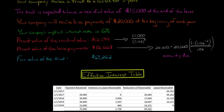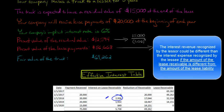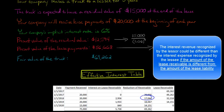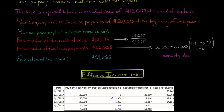On January 1st, we have the $69,262 lease receivable, but we immediately receive a payment of $20,000 from the lessee, so the receivable drops to $49,262. After one year, we multiply $49,262 by 0.06, which gives us effective interest of $2,956. The interest increases the receivable while the $20,000 payment reduces it, so the net change is $17,044. Subtracting that from $49,262 gives us $32,218.